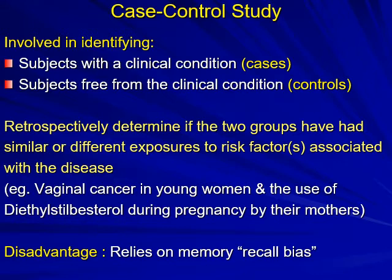For example, vaginal cancer in young women and the use of diethylstilbestrol during pregnancy by their mothers. They asked the daughters with vaginal cancer whether their mothers used this drug during their pregnancy. This has a drawback because it relies on memory — there is a recall bias.